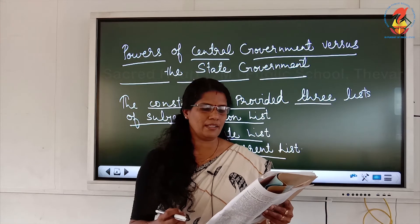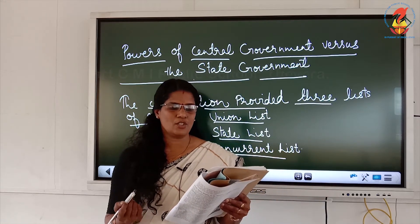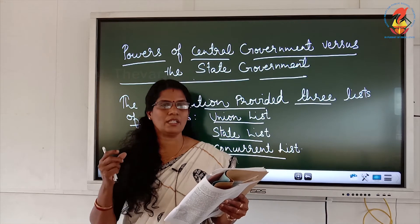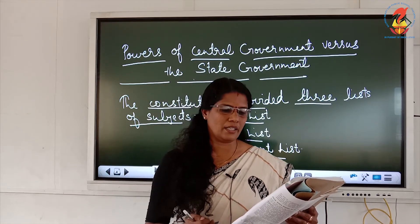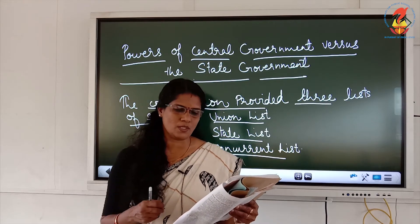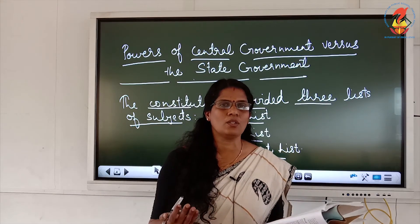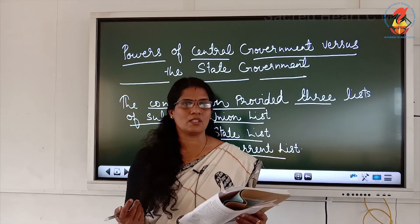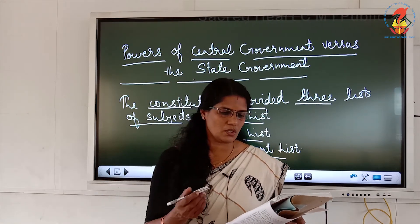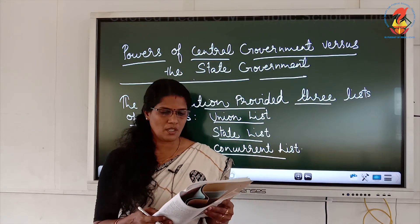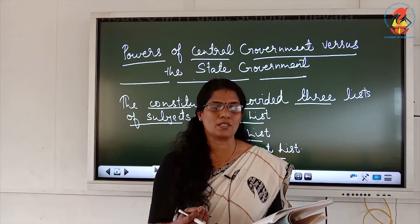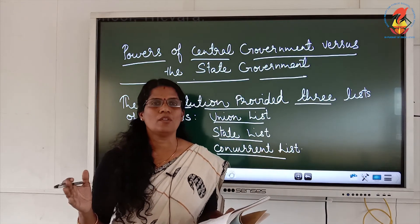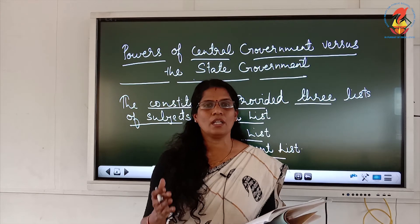Along with untouchables, the Adivasis or scheduled tribes were also granted reservation in seats and jobs. Like the scheduled castes, these Indians too had been deprived and discriminated against. People from lower castes were not treated fairly by the higher castes. The tribals had been deprived of modern healthcare and education while their lands and forests had been taken away by more powerful outsiders. The new privileges granted them by the constitution were meant to make amends for this. The new constitution changed India's attitude towards lower caste people by giving them certain privileges.